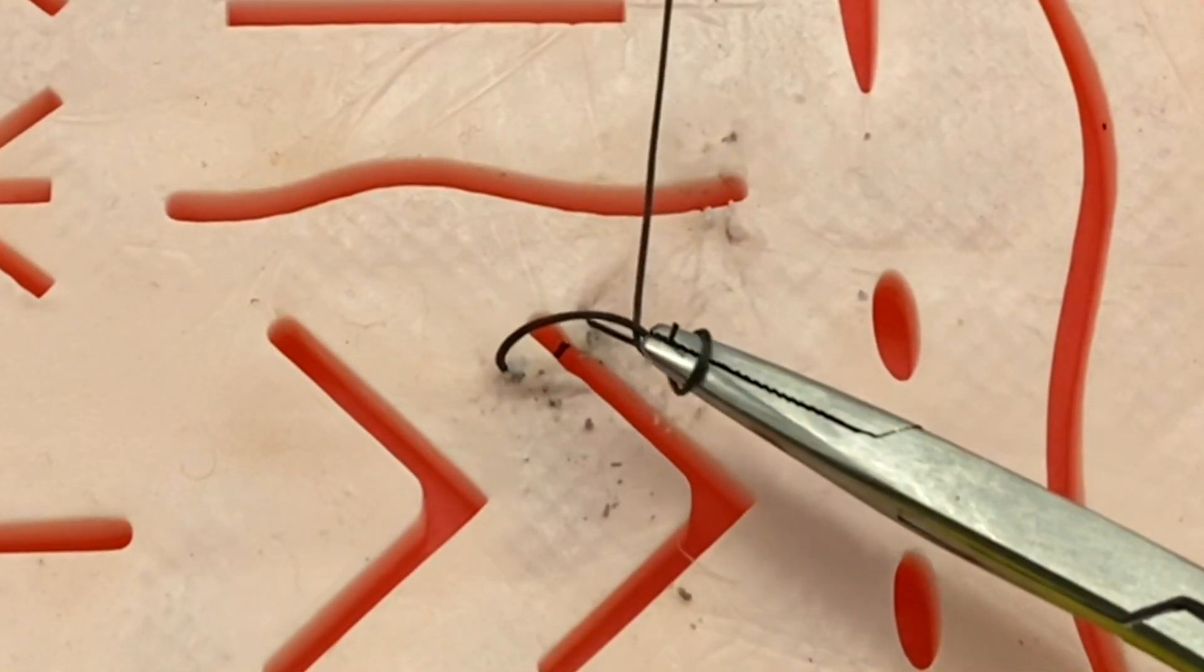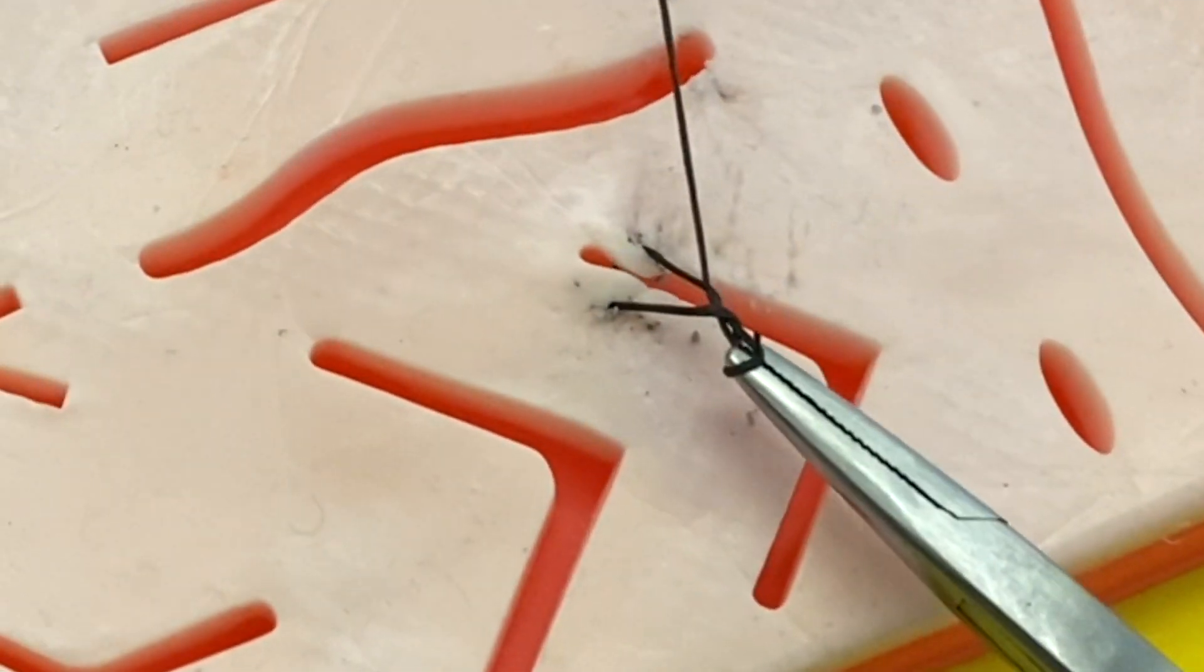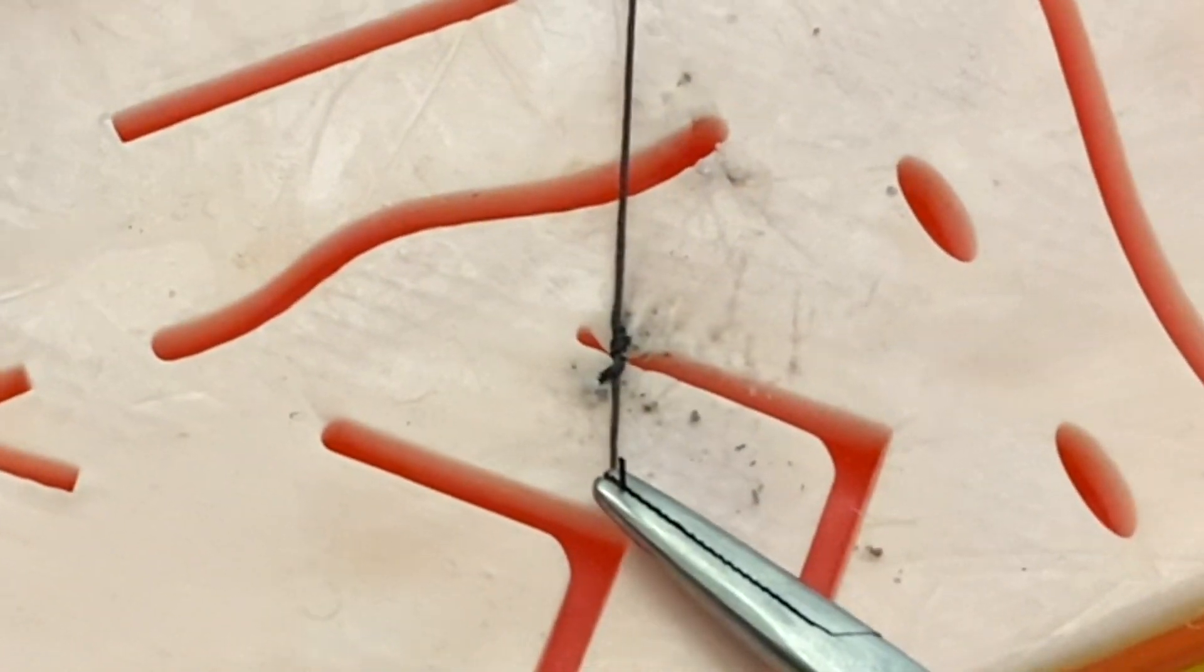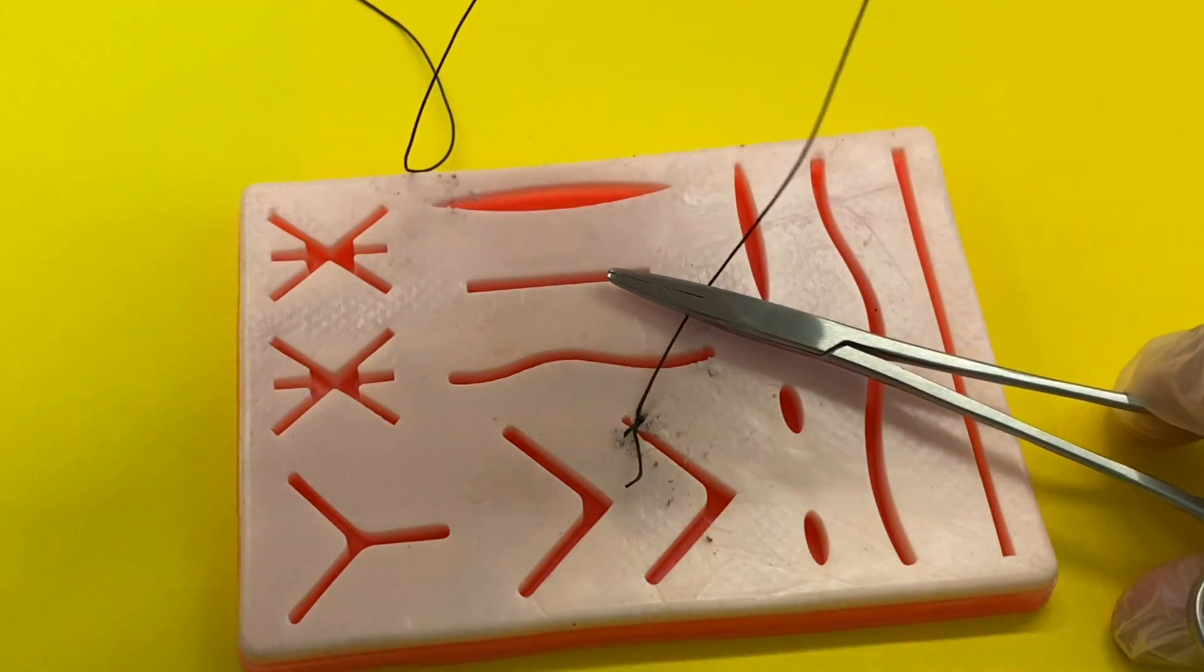And so now you want to pull the string taut. You can see that it got stuck a little bit at the end of my needle holder. You want to try to avoid that. Now what you may notice is that it's not actually knotted yet, so we have to make our knot.